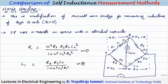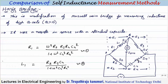The next bridge is the Hays bridge, which is a modification of the Maxwell-Wien bridge, designed to be useful for Q values greater than 10. In this case, a capacitor is connected in series with a resistor — both variable. The resulting balance equation for R1 and L1 is quite complex.